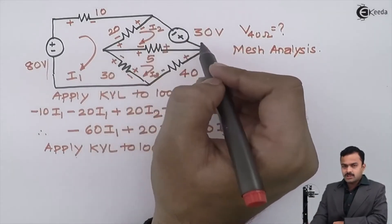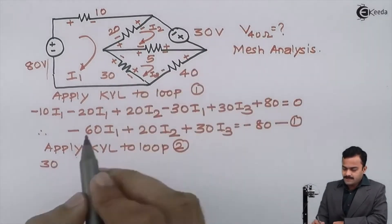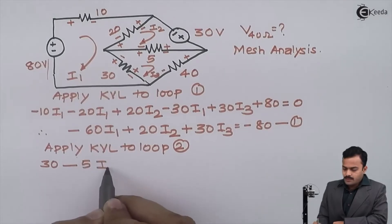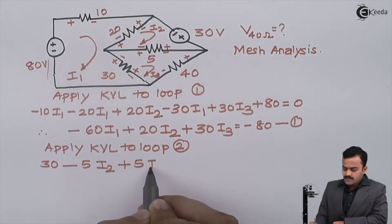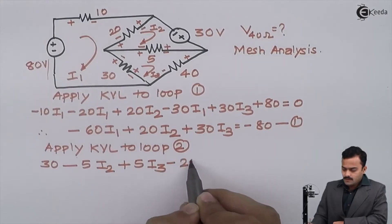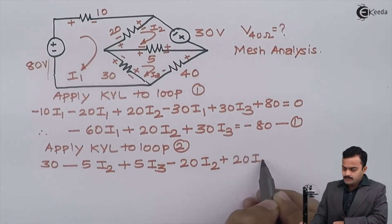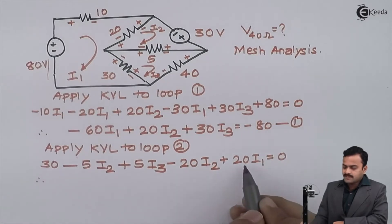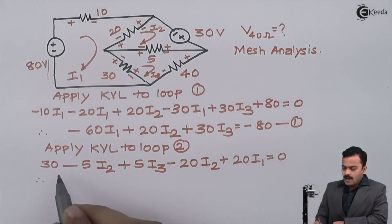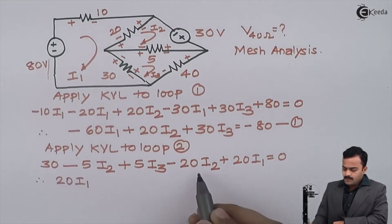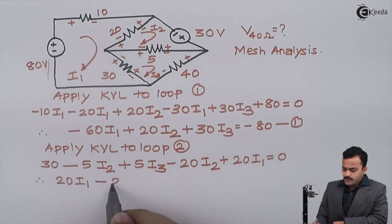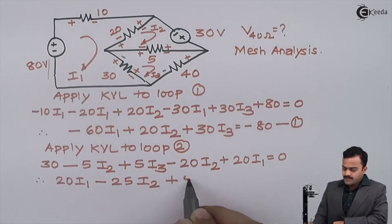In the direction of current, I am having plus 30, minus 5 I2 plus 5 I3, minus 20 I2 plus 20 I1, equal to zero. After simplifying, 20 I1 will remain as it is, then minus 5 minus 20 will become minus 25 I2, and plus 5 I3 will remain as it is. The constant, this plus 30 will go to that side of equation and will become minus 30, equation number 2.